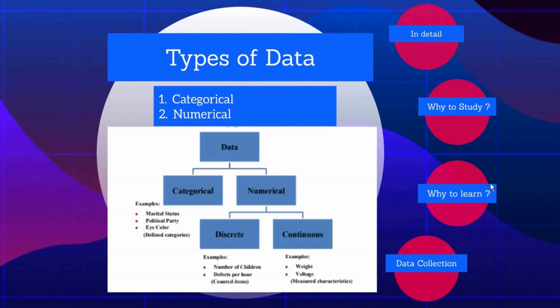So, parameter. Parameter is a numerical measure that describes characteristics of the population. So, it could be let us say population mean or it could be standard deviation of the population. Statistics is a measure that describes the characteristics of sample. Statistics is a measure that describes the characteristics of the population.